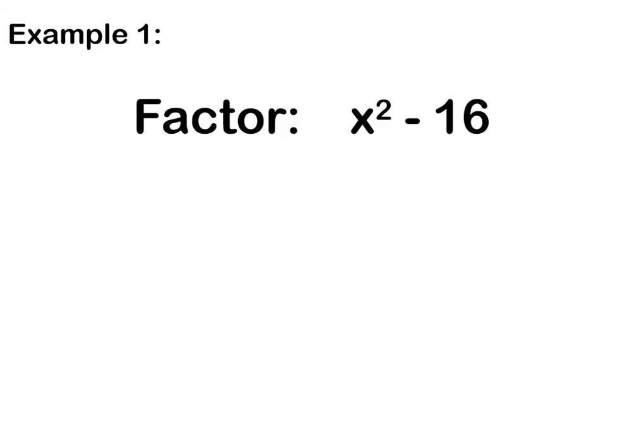Let's take a look at an example. The first thing you need to think about: what times itself gives me x squared? Hopefully you're thinking x times x. The next thing: what times itself gives me 16? Hopefully we're thinking 4 times 4. If you're ever unsure what the square root is, you could always type square root of 16 in your calculator, which would also give you 4. That's another way you can use your resources to help you out.